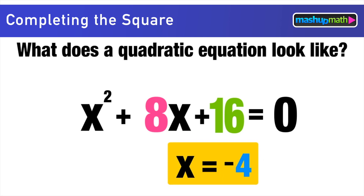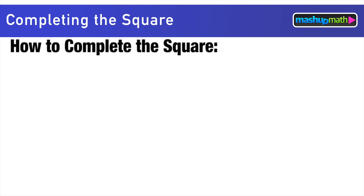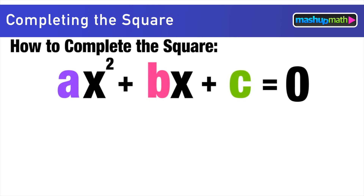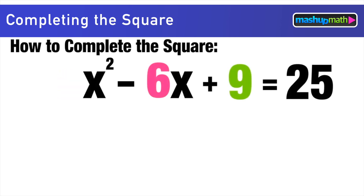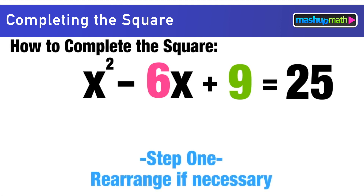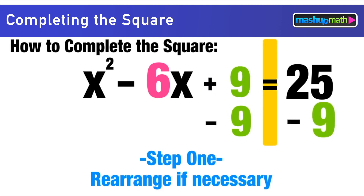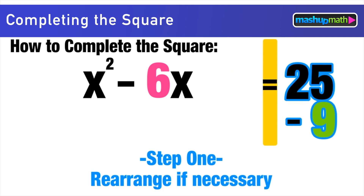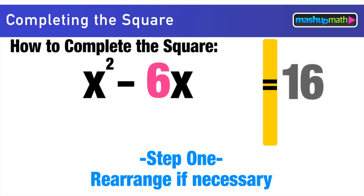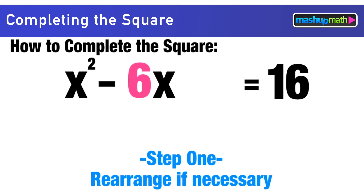Keeping this approach in mind, let's learn how to complete the square. For this example we have x² - 6x + 9 = 25. The first step is to rearrange the quadratic if necessary — we subtract 9 from both sides, giving us x² - 6x = 16.